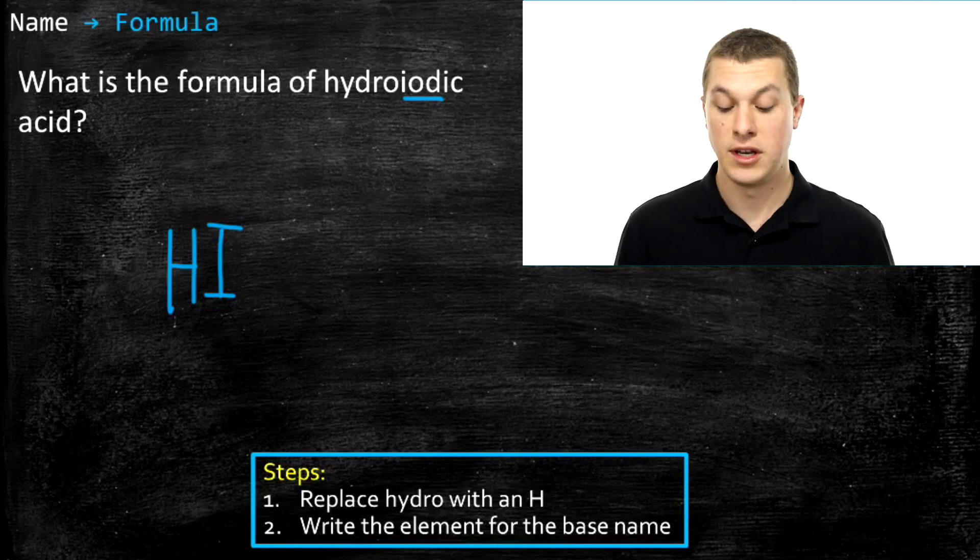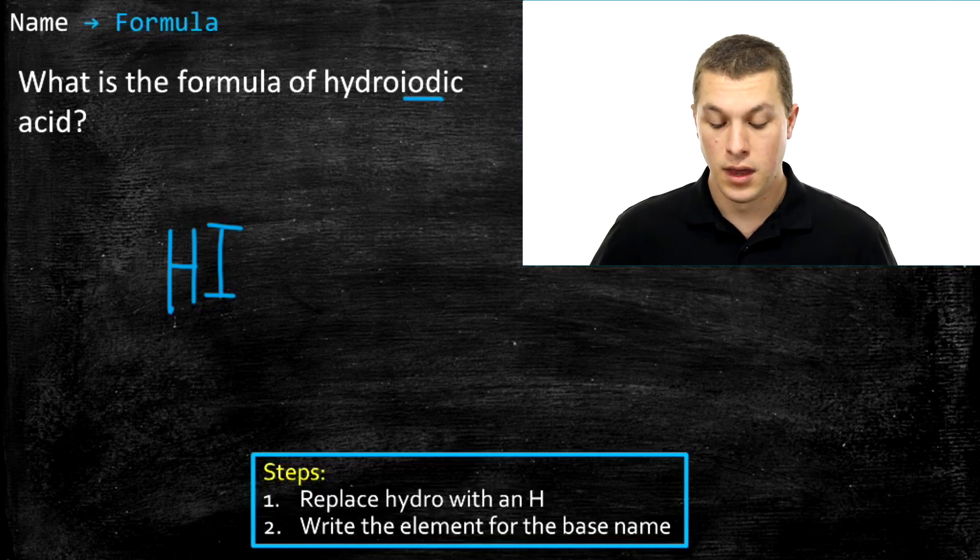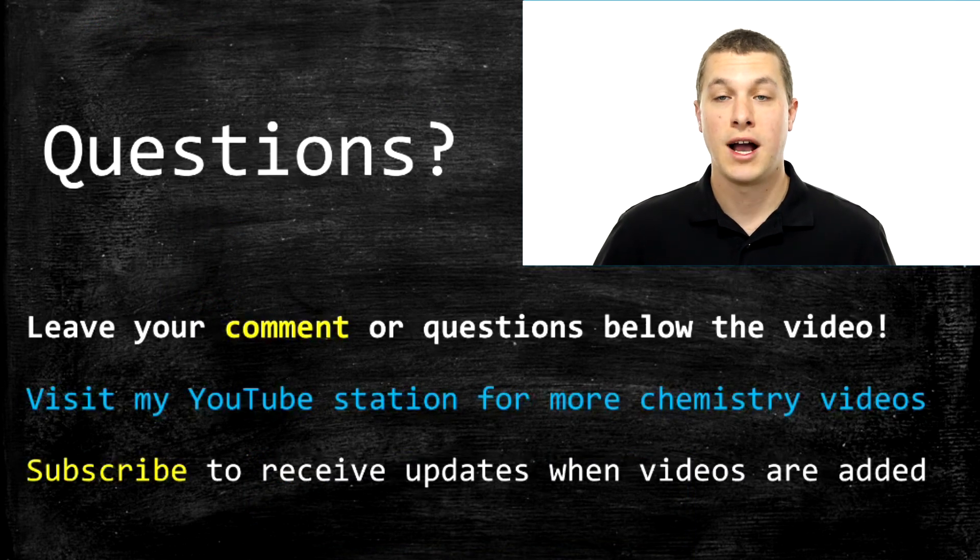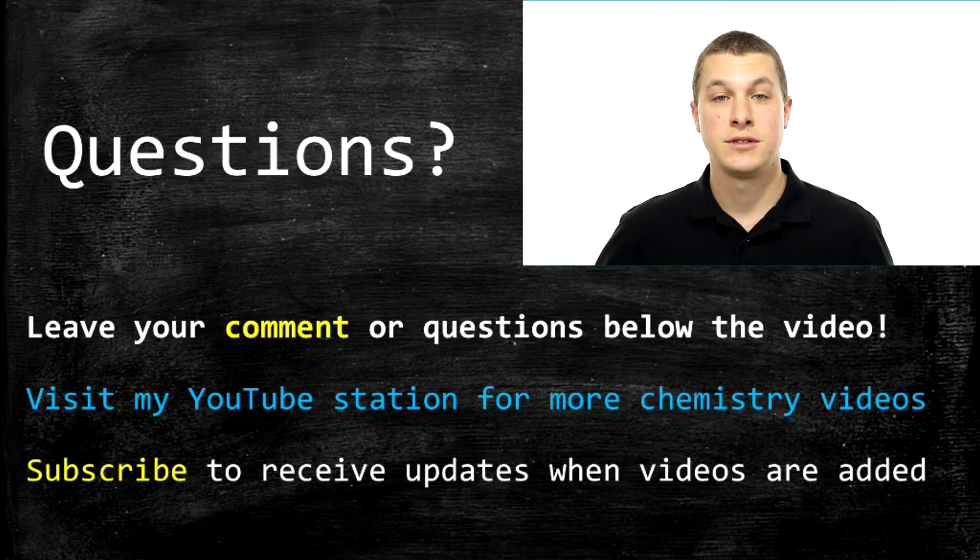So that's how you go from the name to the formula or from the formula to the name for binary acids. In the next video we'll talk about oxy acids. So if you want to know how to name acids that contain oxygen, check out my video on naming oxy acids. Thanks for watching this episode of Real Chemistry. Please leave any questions you have below.